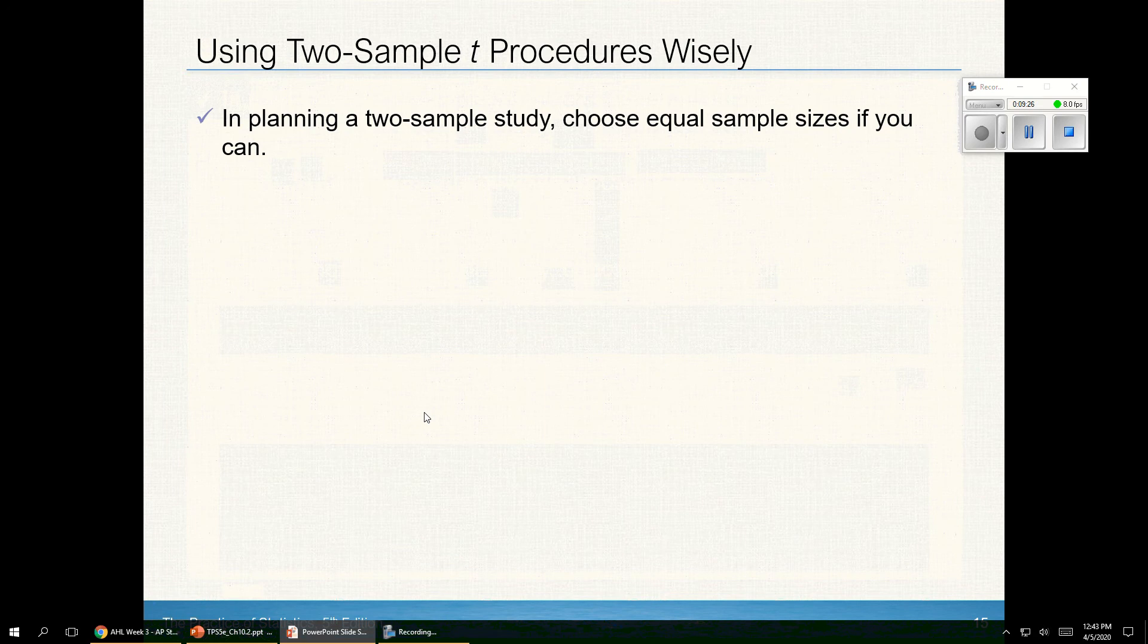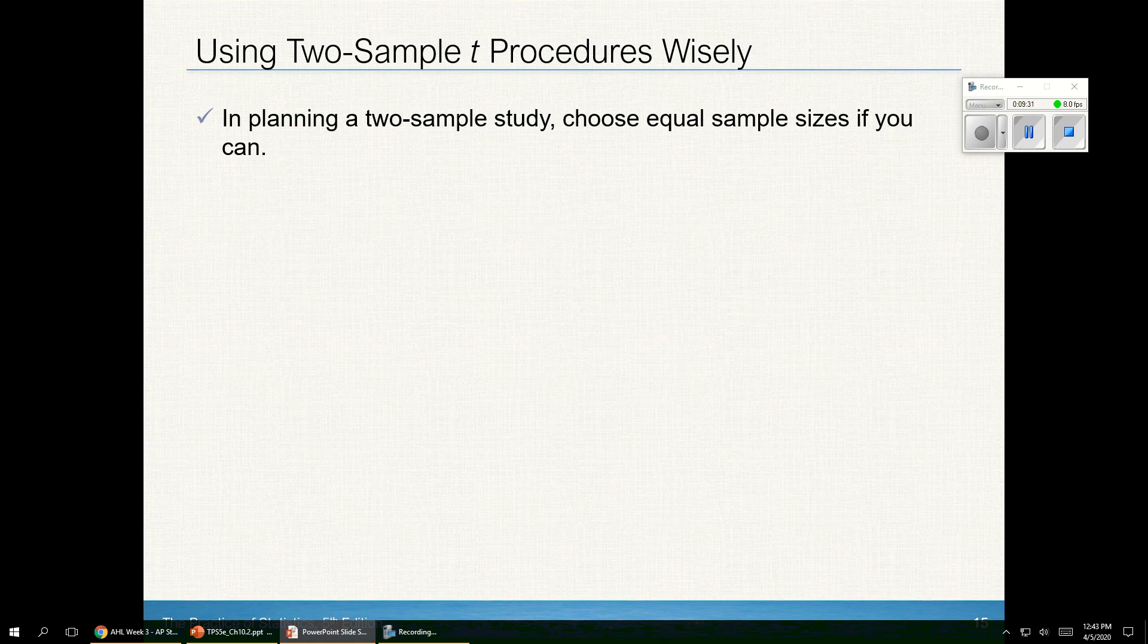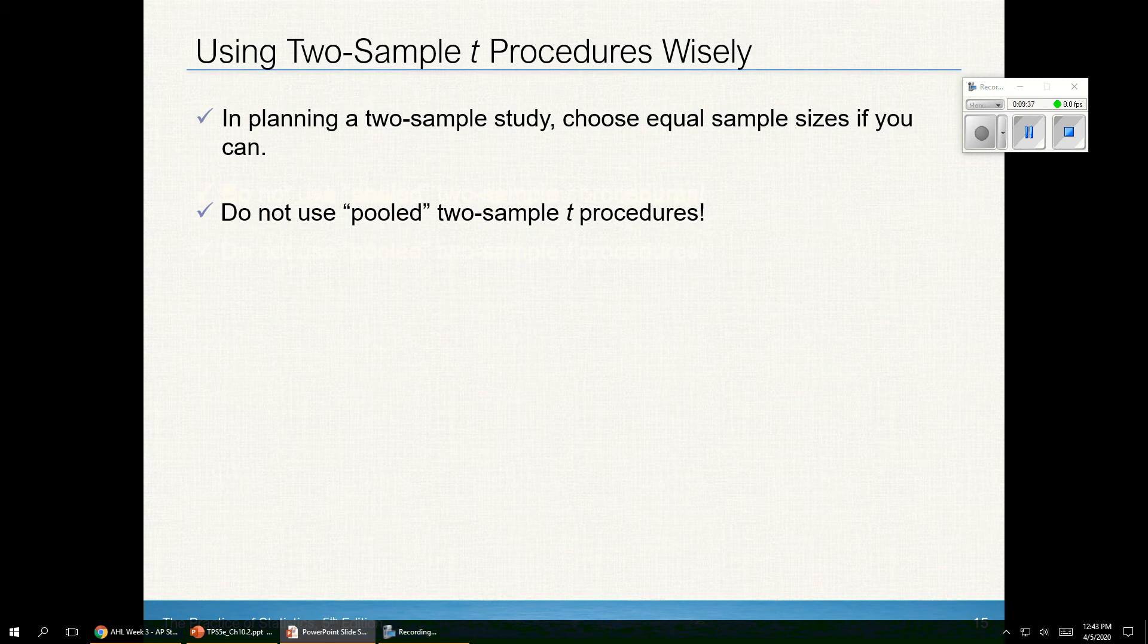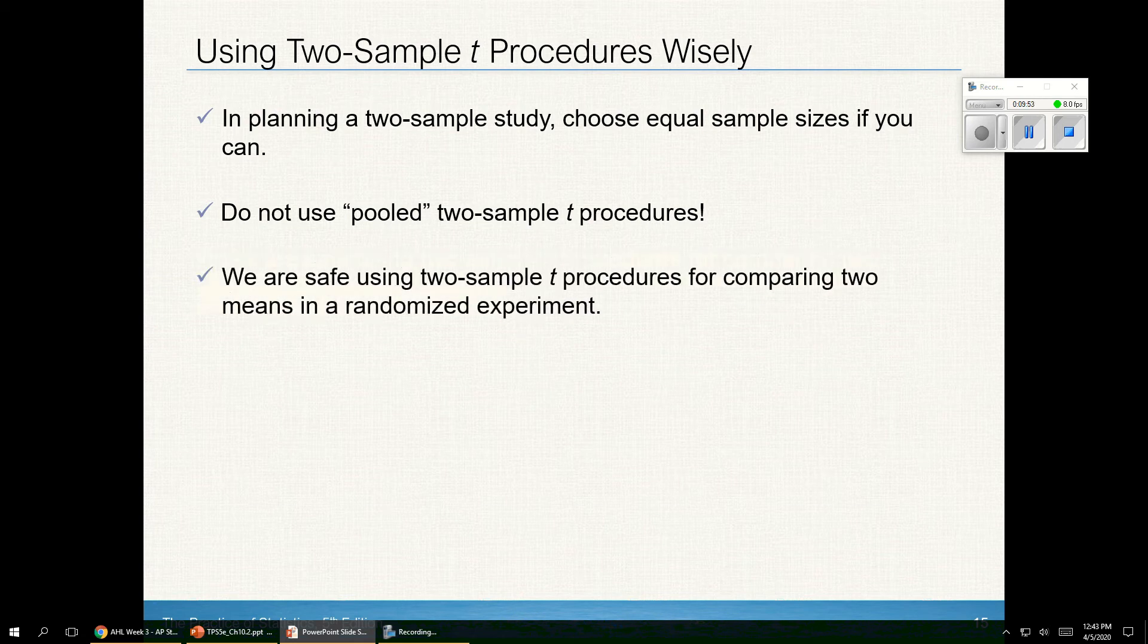When I plan a two-sample study, choose equal sample sizes if you can. When you're planning, if you've already got the answers, go with them. We'll be okay. Do not use pooled two-sample t procedures. I'm not going to go into why. There are cases that would be covered in a later course that could talk about that. But we don't need to do this now, primarily because we have good technology that will handle it for us. We're safe using two-sample t procedures when comparing for two means in a randomized experiment.